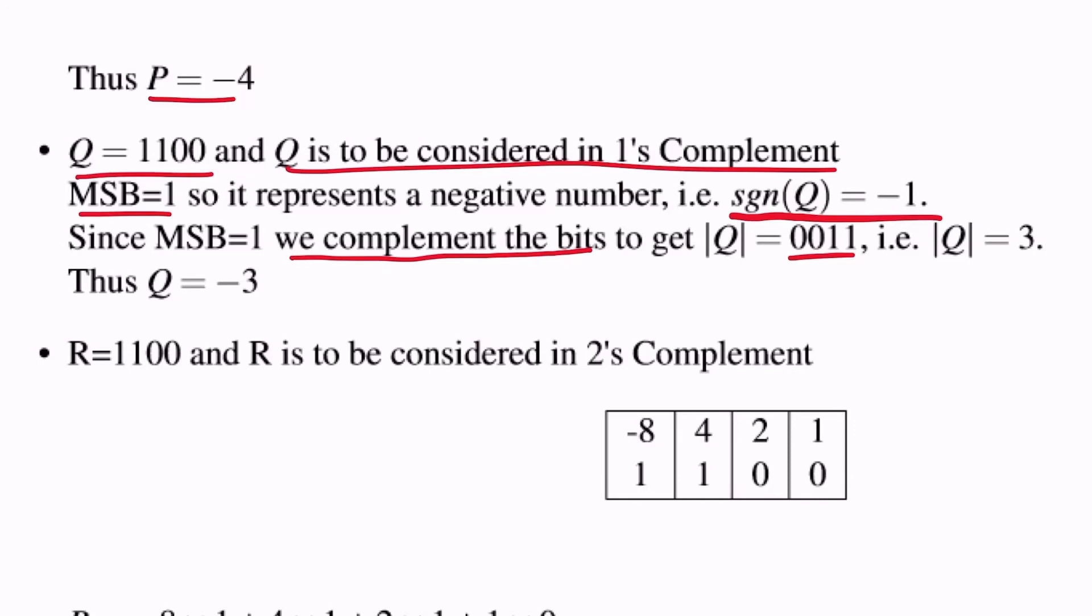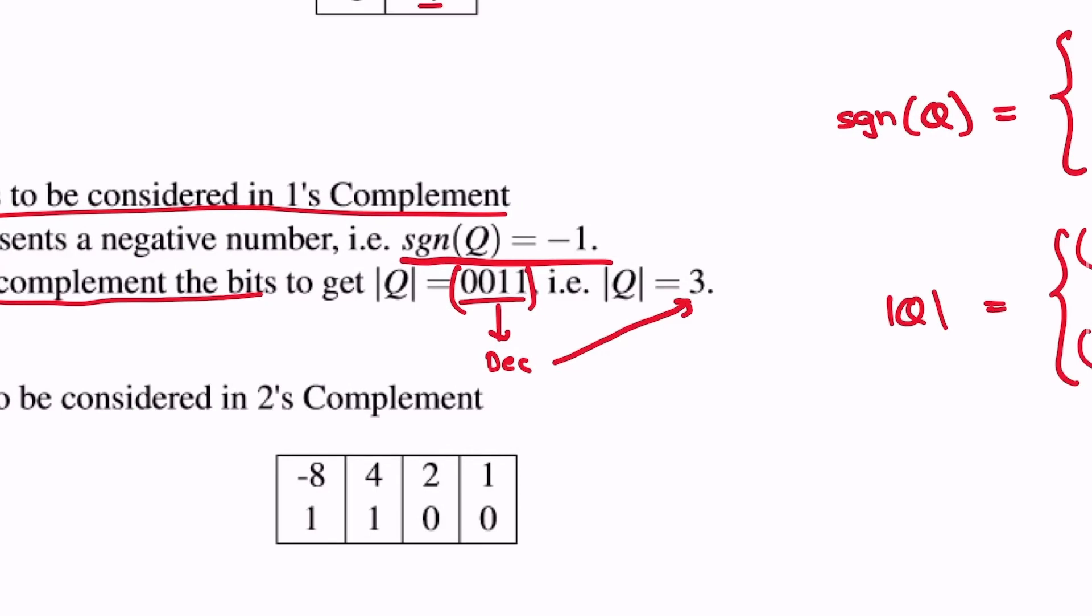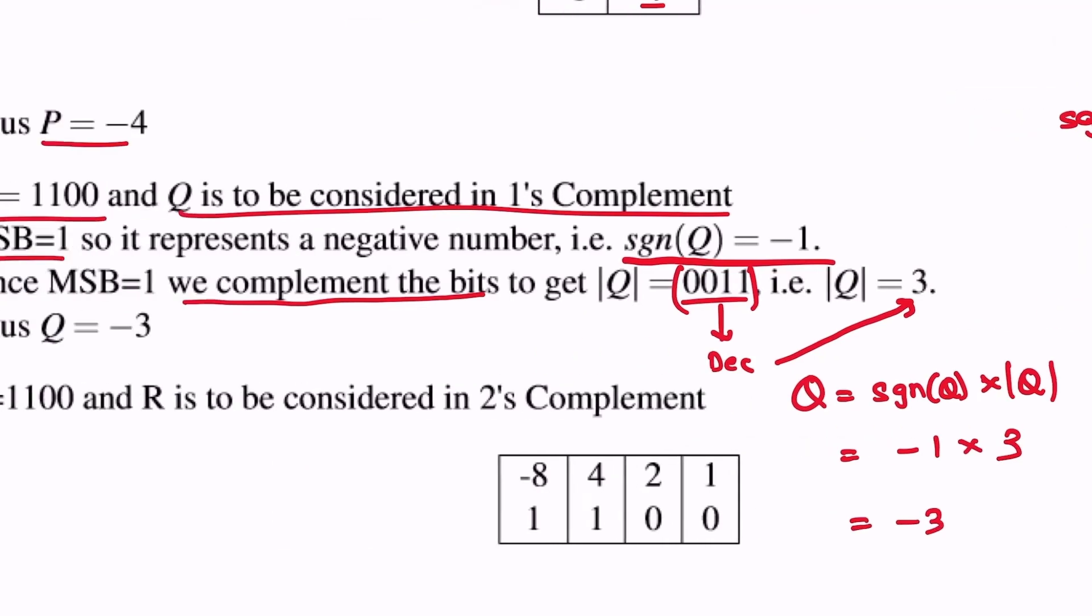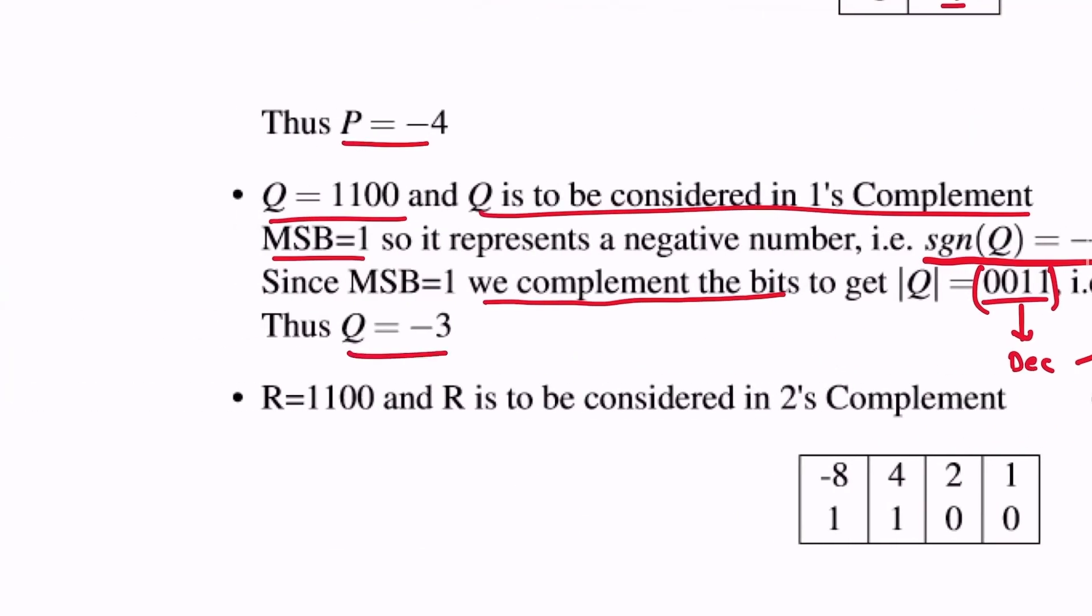And then we convert this to decimal, which is 3, times minus 1, which is minus 3. Thus Q is minus 3.